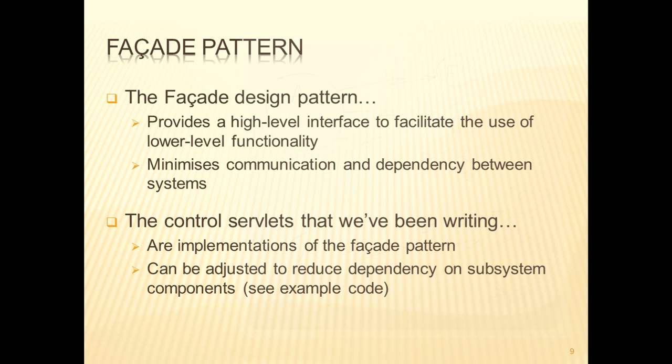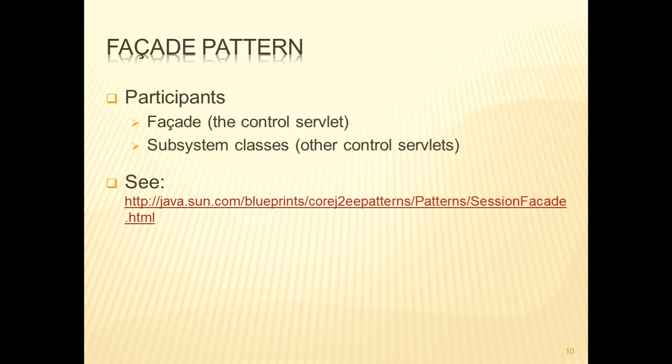We could further reduce — or adjust — this to reduce the dependency on subcomponents, and we'll see some examples of that a little bit later. In the facade pattern we have simply two types of participants: the facade, and the subsystem classes — which in our internet applications are the other servlets, whether they be control, model, or view.